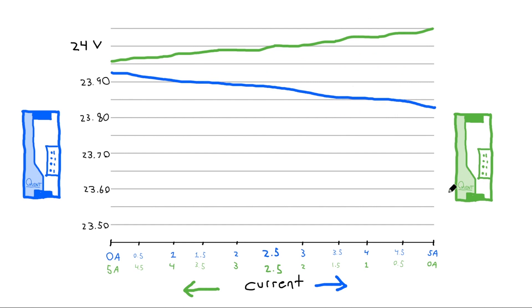Since the slope is very flat, small changes will result in one power supply taking over completely.